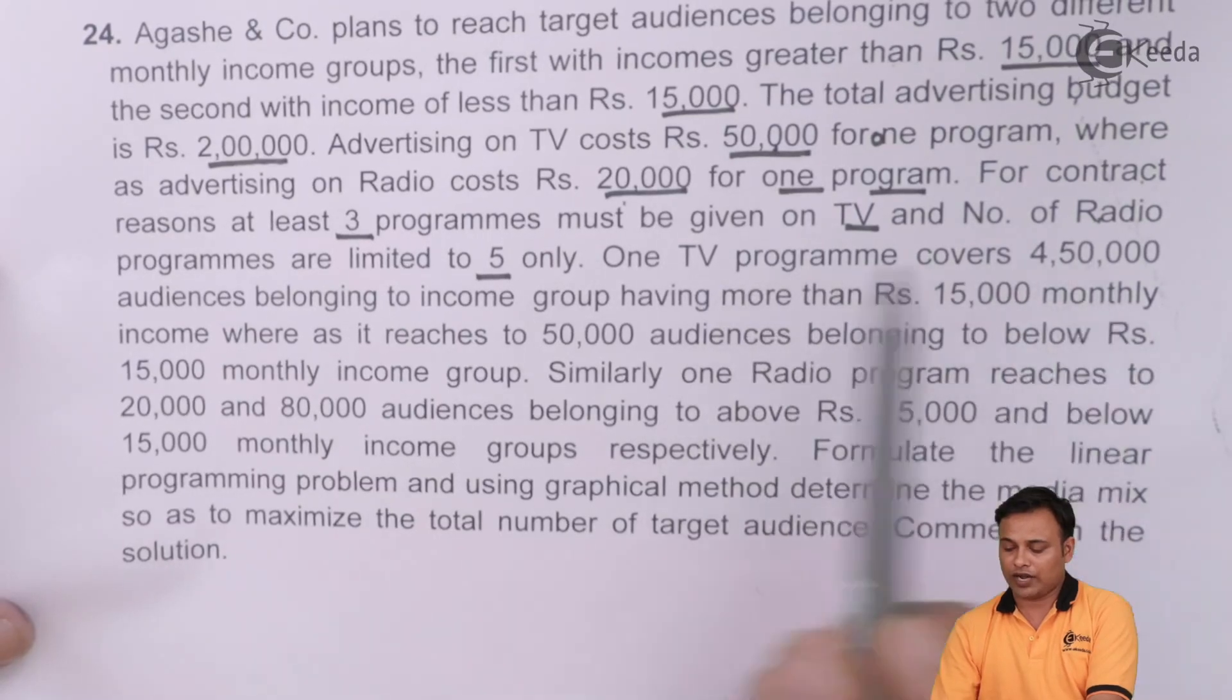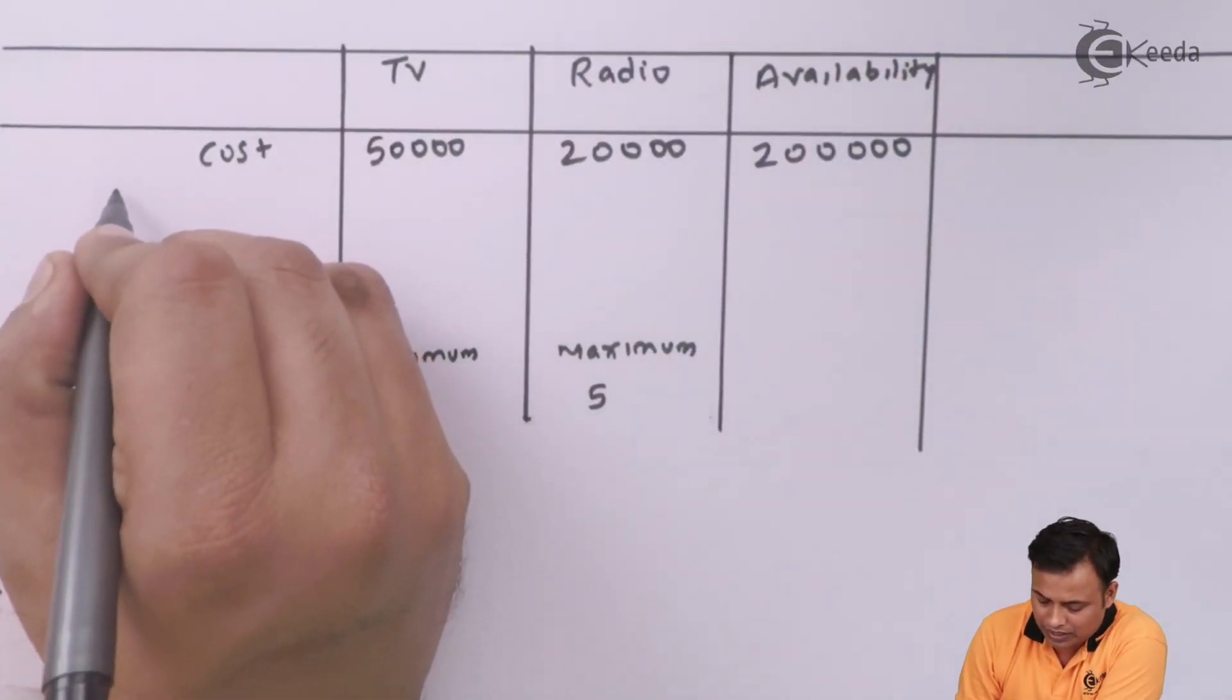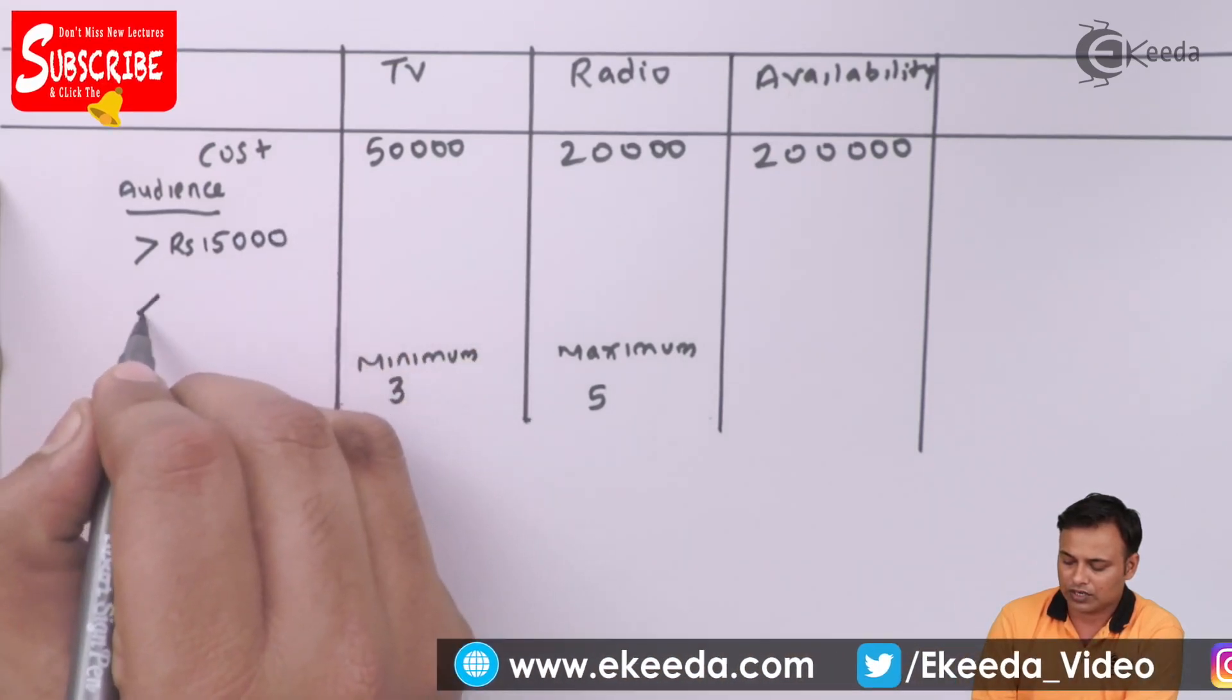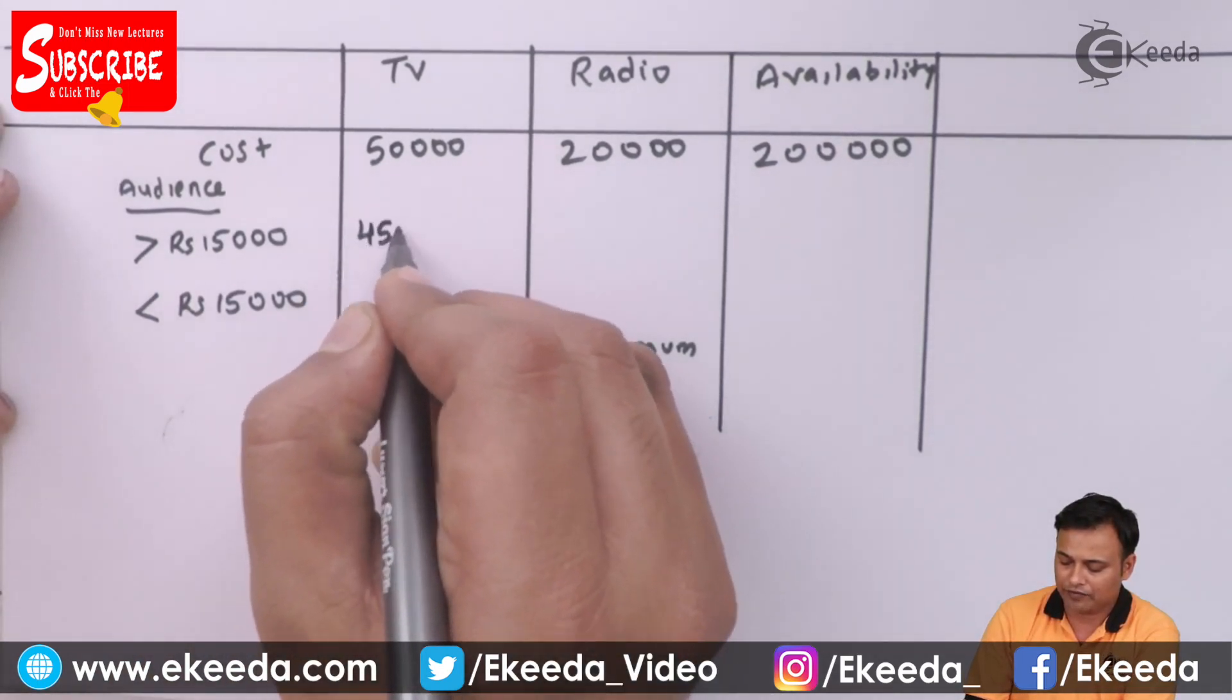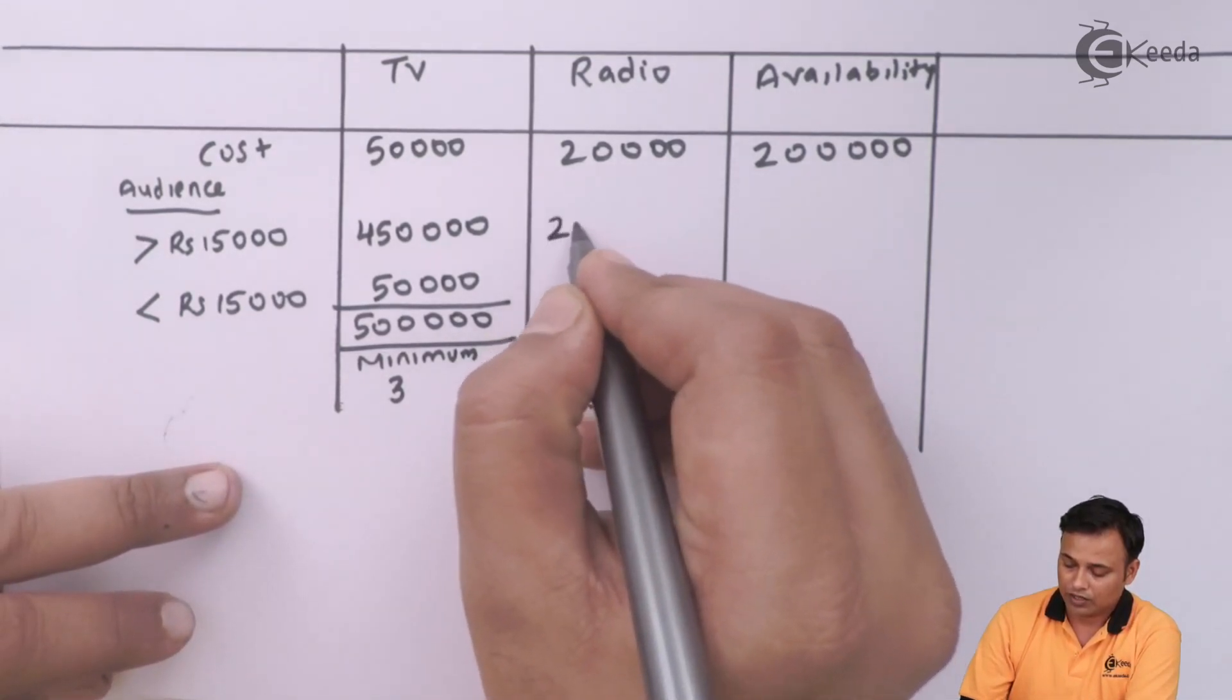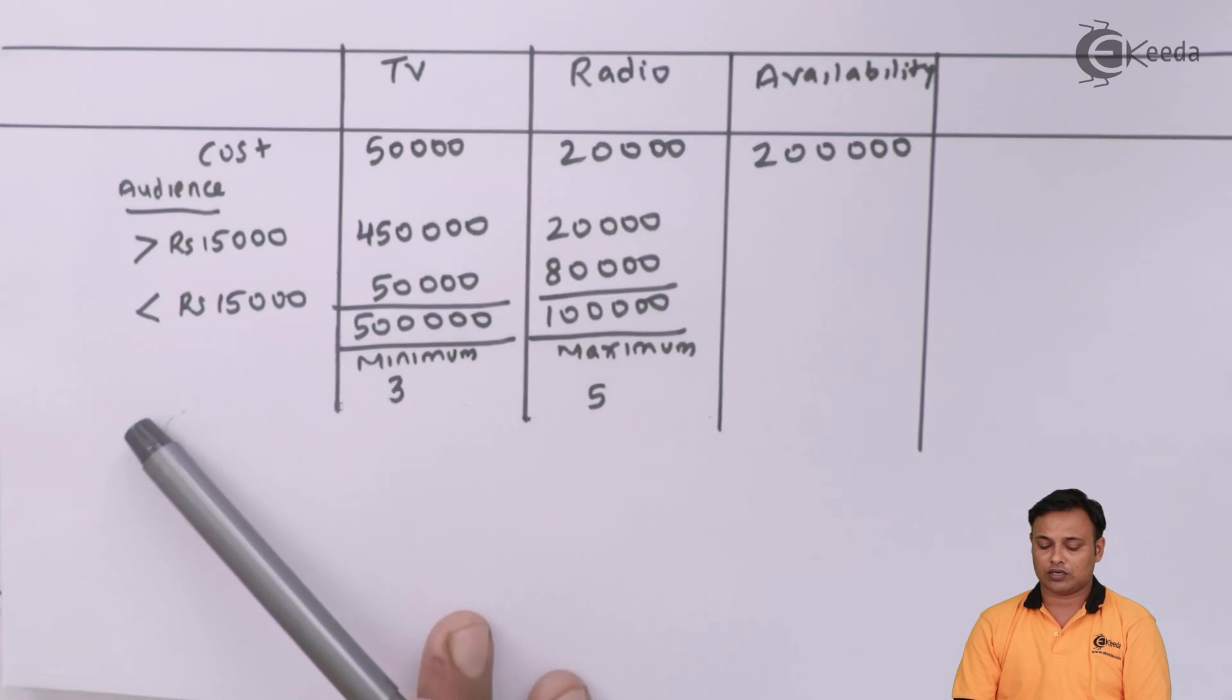One TV program covers 4,50,000 audience belonging to income group having more than 15,000 monthly income, and it reaches 50,000 belonging to below 15,000 income group. So I will write down the income groups here. That is my target reach for audience. In case of audience, one is more than rupees 15,000 income, one is less than rupees 15,000 income. The reach here is 4,50,000 and here it will be 50,000. So total will be 5,00,000. In case of radio it is 20,000 and 80,000 that comes to 1,00,000. And we need to maximize this audience or the total people of the reach.